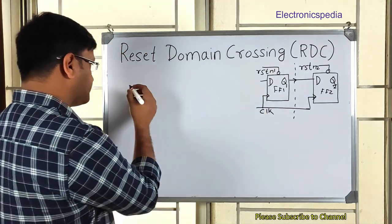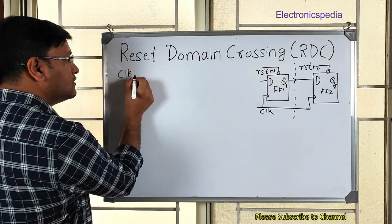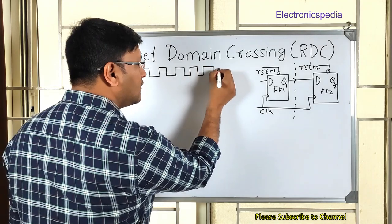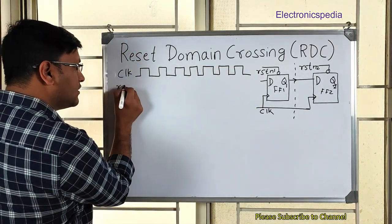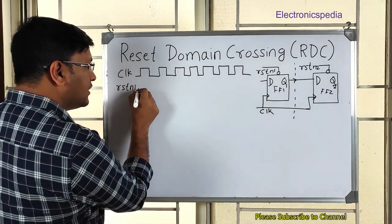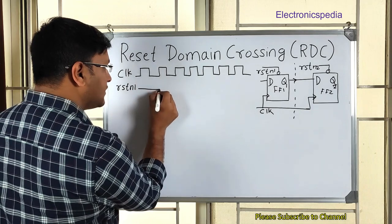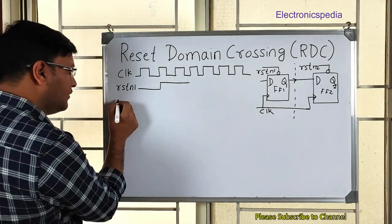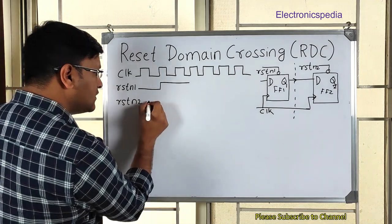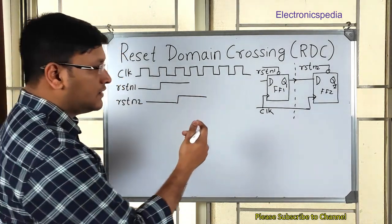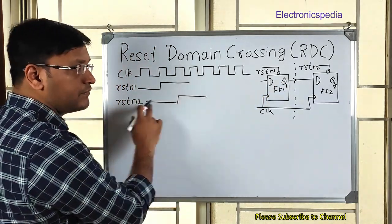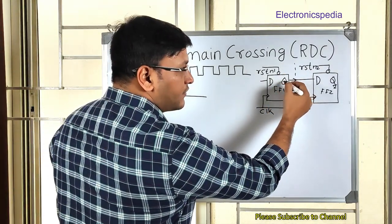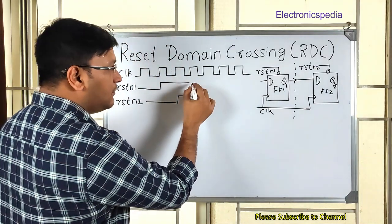I'd like to explain this concept with the help of a waveform. Assume this is your clock. This is reset_n1 — it's asserted here and de-asserted over here; it's active low. Now we have reset_n2 — it looks like this. Now assume reset_n2 is de-asserted, meaning it's out of reset, and similarly reset_n1 is also de-asserted. So the data is propagating from flip-flop one to flip-flop two — all is good.